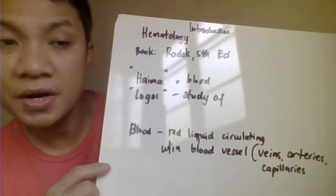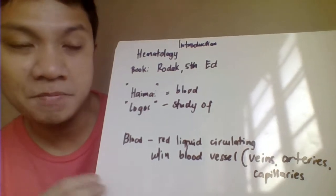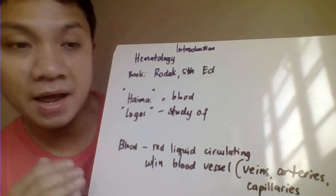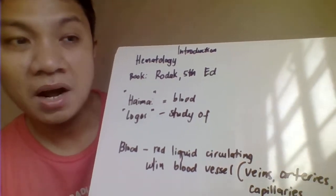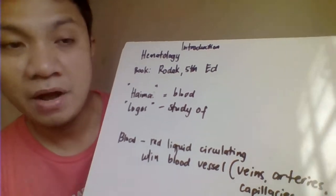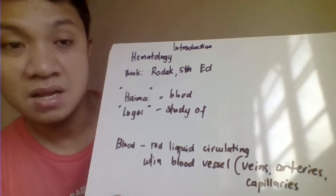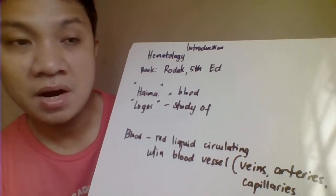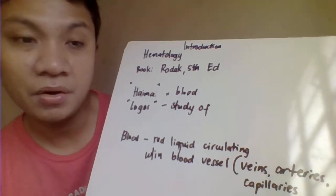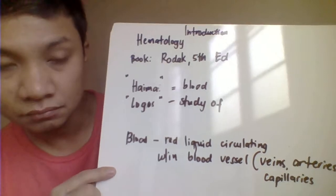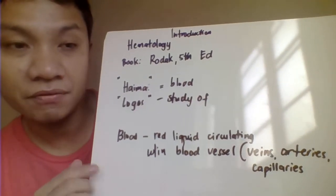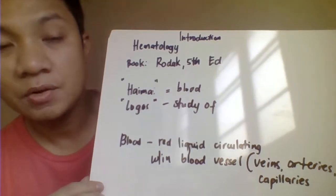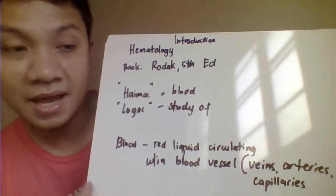In hematology, aside from blood cells, we'll also discuss the different blood-forming organs. Abnormality in production is reflected in peripheral circulation, including abnormalities in the bone marrow and liver — the liver being especially important during embryonic and fetal development. Our blood is red in color because of the pigment hemoglobin suspended in it, and blood flows within our blood vessels, which include veins, arteries, and capillaries.